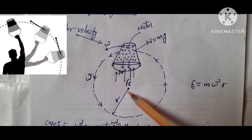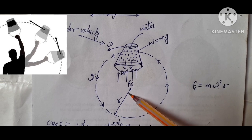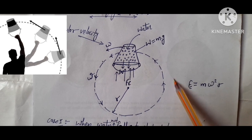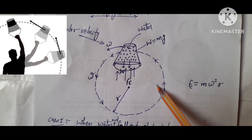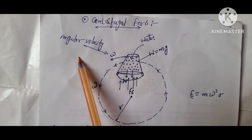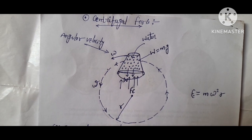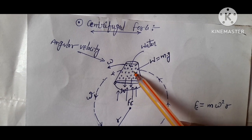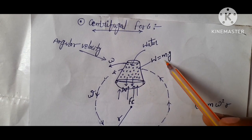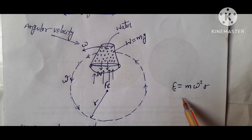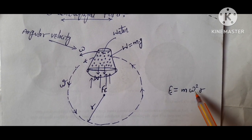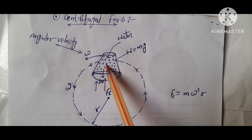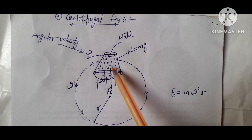Now another example: this bucket is tied with a string having a small radius r. This tied bucket is rotated quickly in this direction with angular velocity omega. The water weight equals m times g, and the centrifugal force formula equals m omega squared r, where r is the string radius and m is the mass.